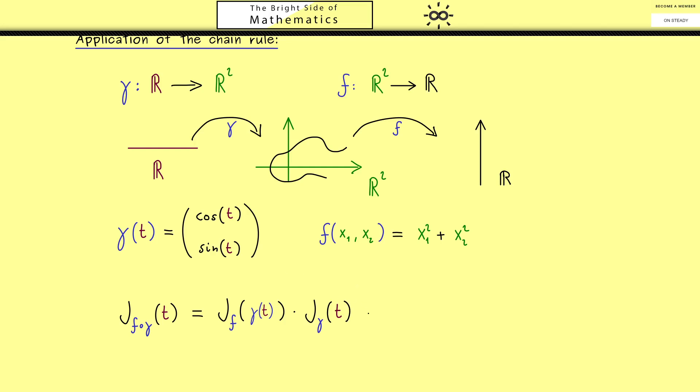And now both matrices here we can easily calculate. First the Jacobian matrix of f would have the partial derivative of f with respect to x₁ in the first component, and in the second column we find the partial derivative with respect to x₂. So this is the whole Jacobian matrix of f. However this is not correct because we have to put in the point γ(t). This means here in the first component instead of x₁ we would have the cosine of t, and in the same sense here in the second component we have sine of t. And now this Jacobian matrix is correct.